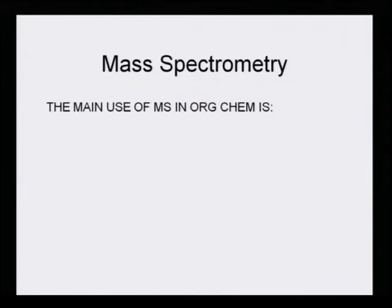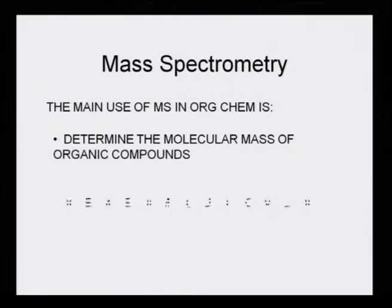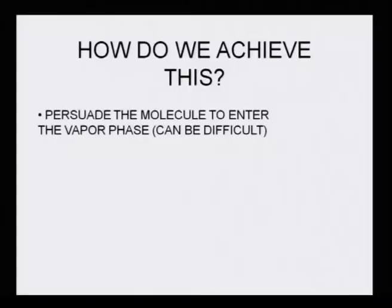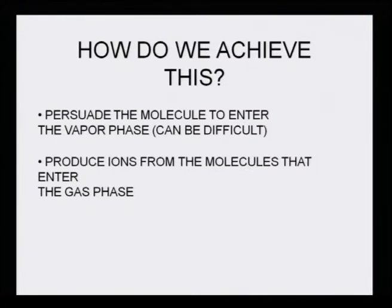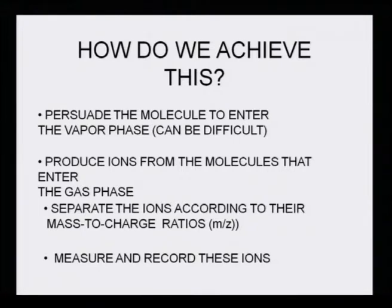The main use of mass spectrometry is in organic chemistry: to determine the molecular mass and the molecular formula of an organic compound. To achieve this, the molecules must be persuaded to enter the vapor phase. Ions are then produced from those molecules in the gas phase and separated according to their mass-to-charge ratio, m/z.